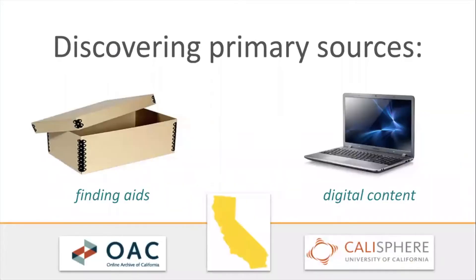As a researcher, you can discover primary source materials in two major ways. The first is through finding aids, which essentially offer detailed descriptions and inventories of primary source collections, including information about the materials, such as photographs, manuscripts, papers, scrapbooks, and so on, that you may discover in the collection. These descriptions include information about how you may access, request, and use the physical collections on site.